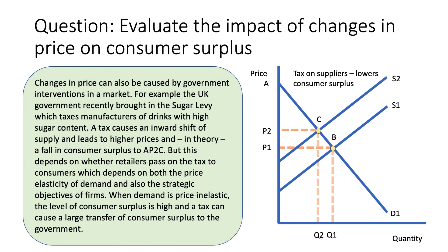Changes in price could also be caused by interventions in a market. A good example is the recent introduction of the sugar levy, which places taxes on high-sugar drinks — the higher the sugar content, the higher the tax. The tax is on manufacturers and causes an inward shift of supply shown in the diagram, leading to higher prices and a fall in consumer surplus. Originally consumer surplus was area A, P1, B, but after the tax it falls to A, P2, C. This depends on whether retailers pass on the sugar levy to consumers.